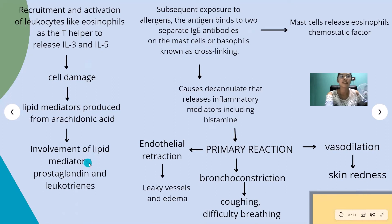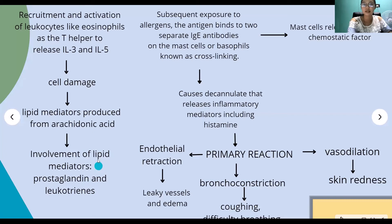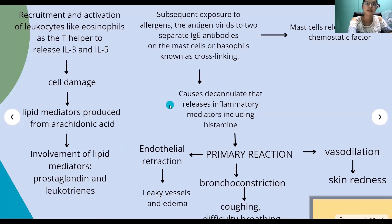Lipid mediators produced from arachidonic acid are also involved, leading to the production of prostaglandins and leukotrienes. Prostaglandins control processes such as inflammation, blood flow, and blood clot formation. Leukotrienes are inflammatory chemicals released by the body after contact with an allergen or allergy trigger, causing tightening of airway muscles and excess mucus production.